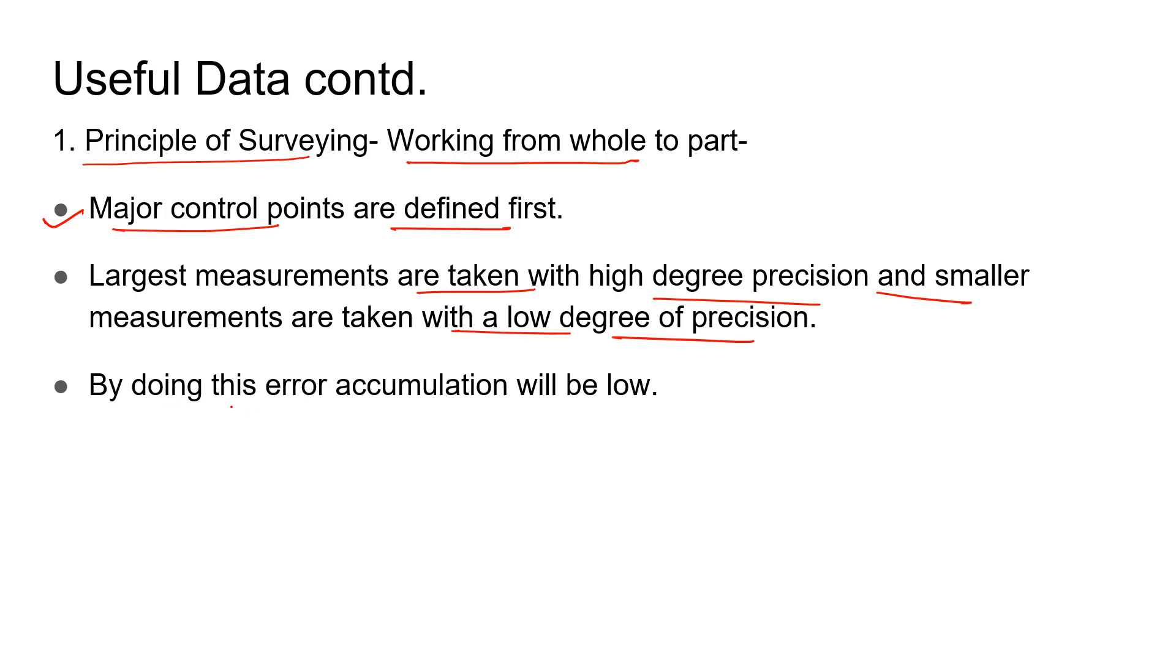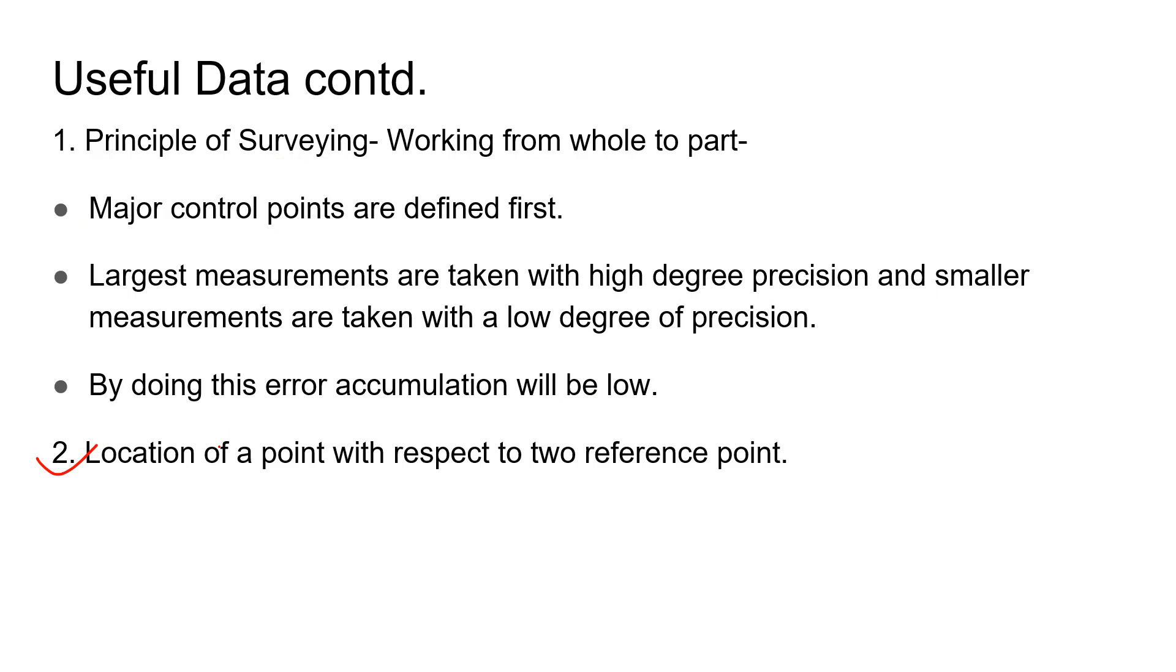The second principle of surveying is about finding the location of a point with respect to two reference points.